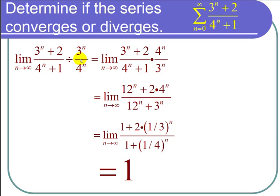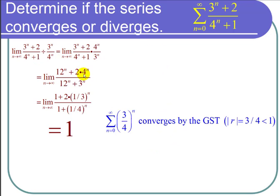Next we want to look at the series from n equals 0 to infinity of 3 to the n over 4 to the n, the geometric series. And we know that this geometric series converges by the geometric series test because r here is 3/4.